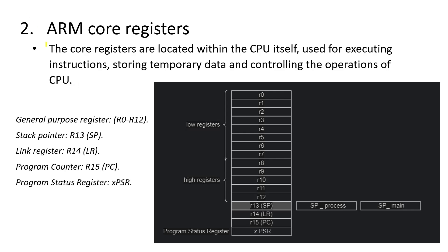Let's move to the next section: ARM core registers. In the ARM CPU, the core registers are located within the CPU itself and are used for executing instructions, storing temporary data, and controlling CPU operations. The ARM core registers include: general purpose registers (R0 to R12), the stack pointer (R13/SP), the link register (R14/LR), the program counter (R15/PC), and the program status register (PSR).